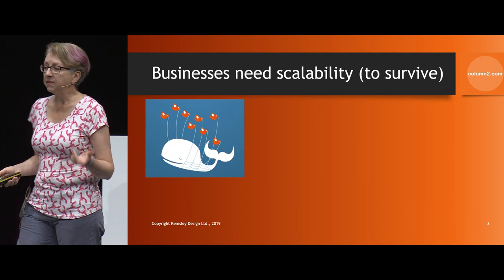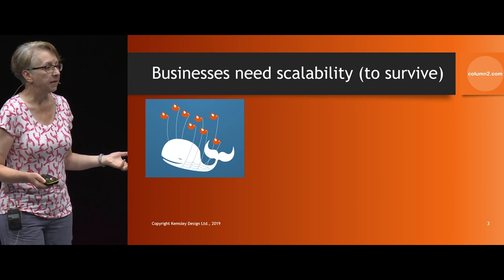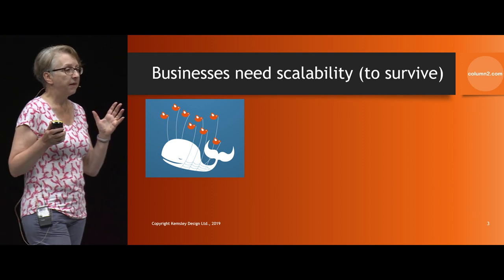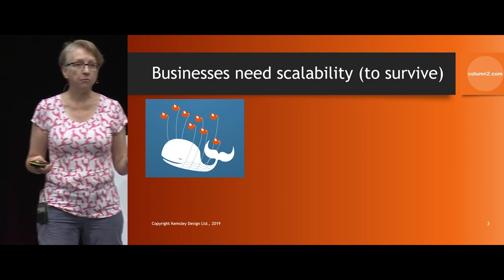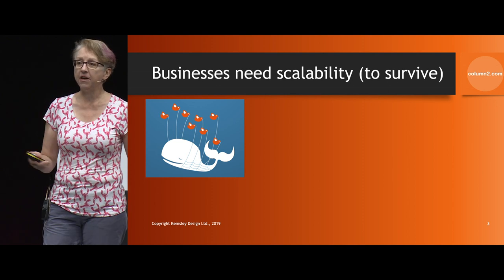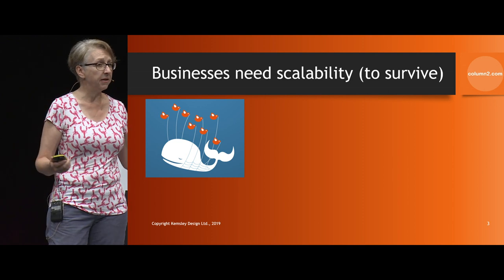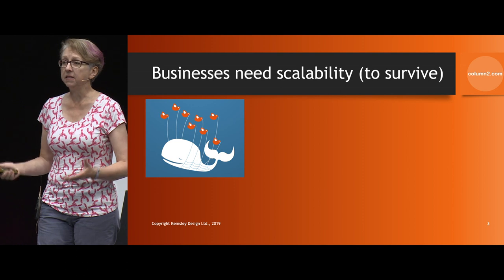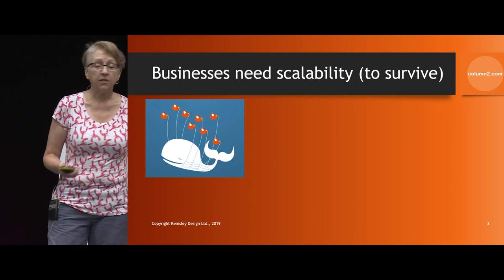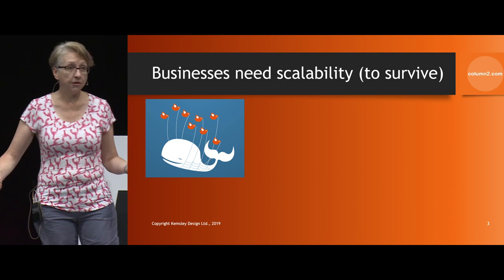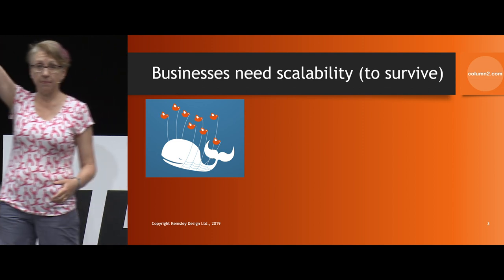The second thing businesses need is scalability. This is more of a day-to-day survival issue: whereas agility is for innovation and long-term survivability, scalability is about short-term survival. How many of you were on Twitter in 2007?